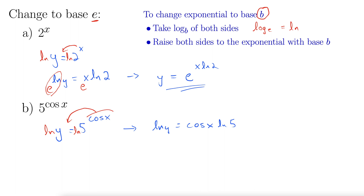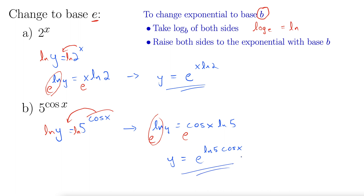Now we take both sides base e again. E and the natural log undo each other, leaving us with y equals e to the natural log 5 times cos x. That's a slightly better form of writing it. And there you go — we've changed the base from base 5 to base e.